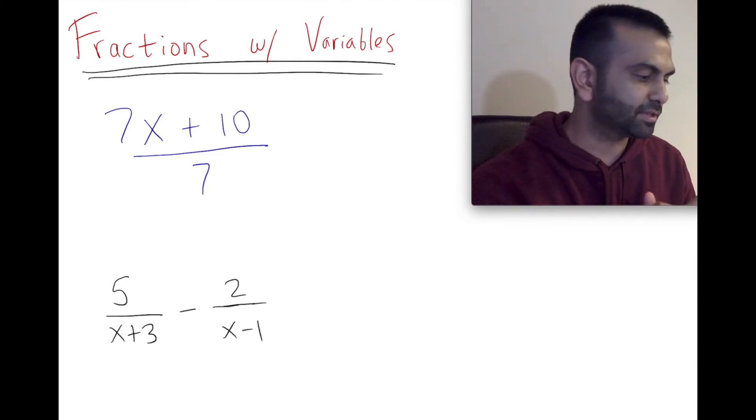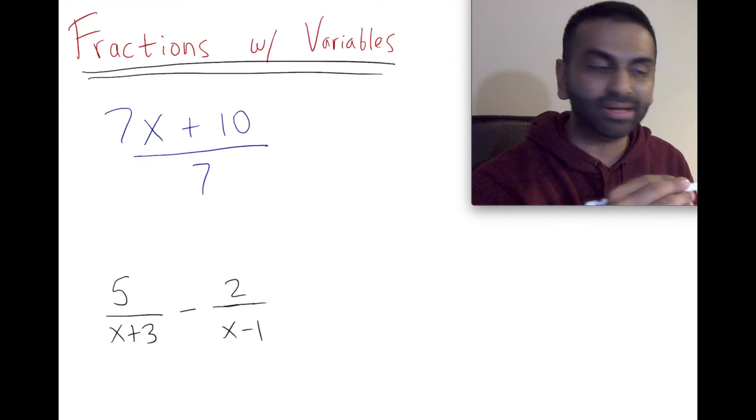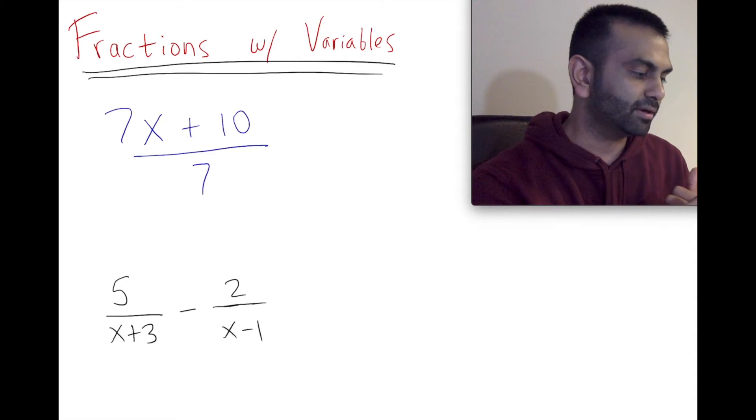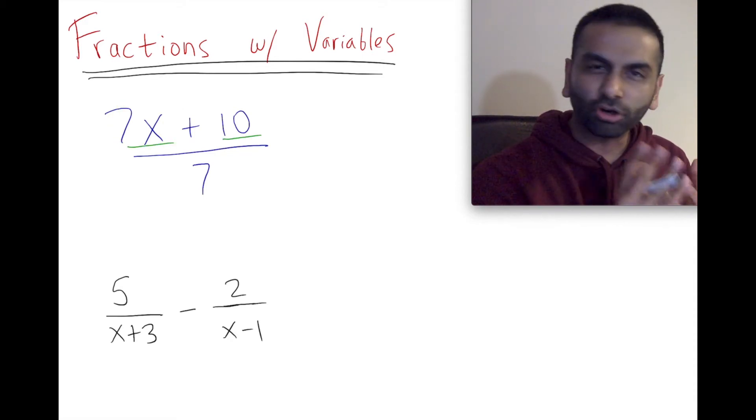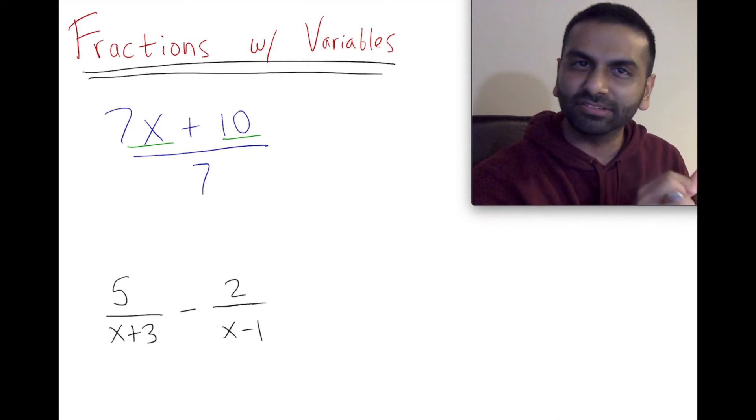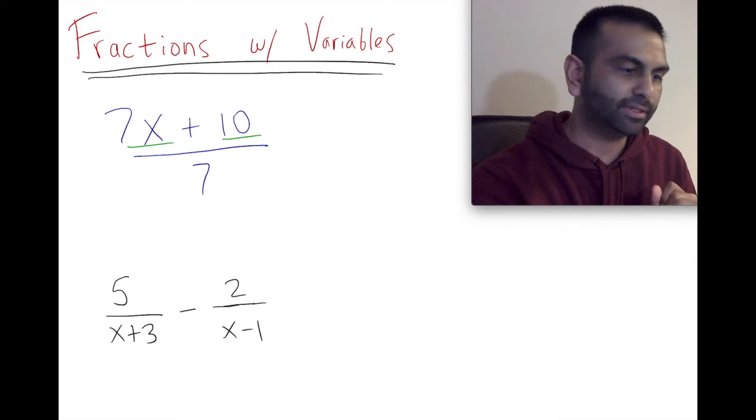Here, the problem is even though the top and bottom both have a 7, and while the 7 is multiplied to the entire denominator, the numerator, the 7 here is only multiplied to this first term. Terms are what's separated by pluses and minuses, so there are two terms in the top. Because that 7 doesn't apply to the whole thing, we can't really do that.